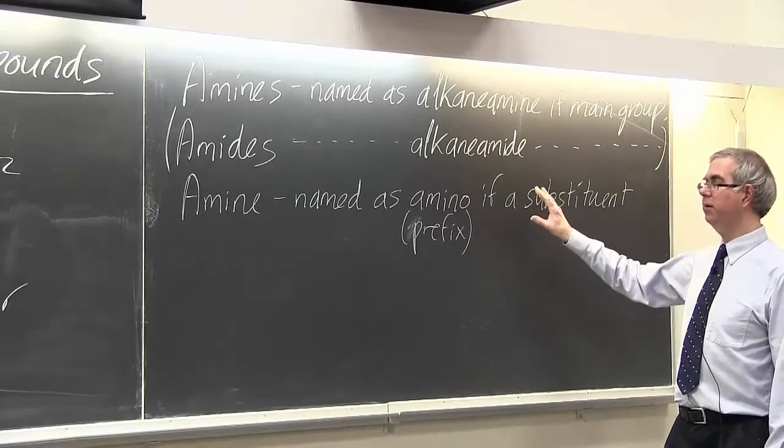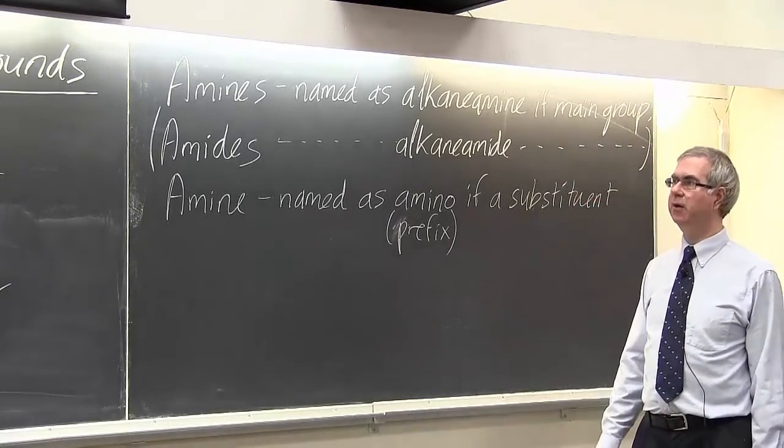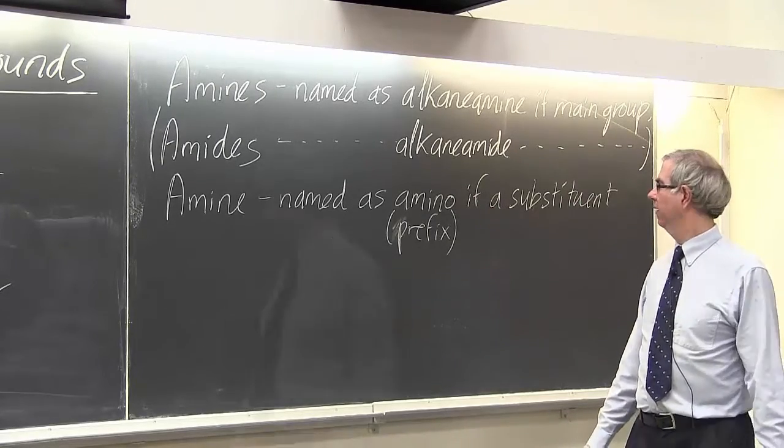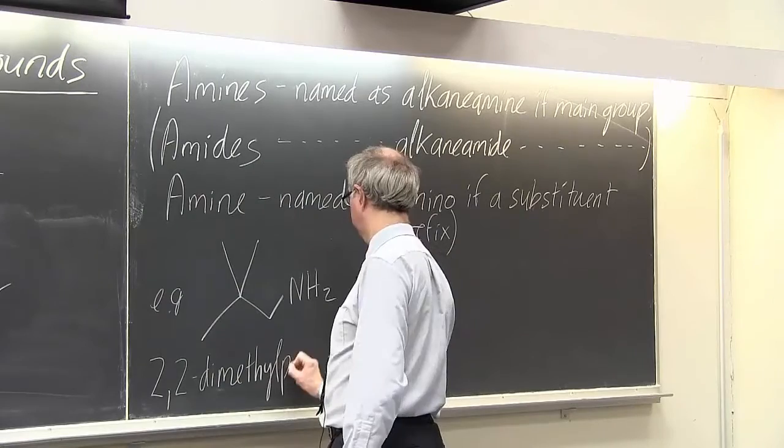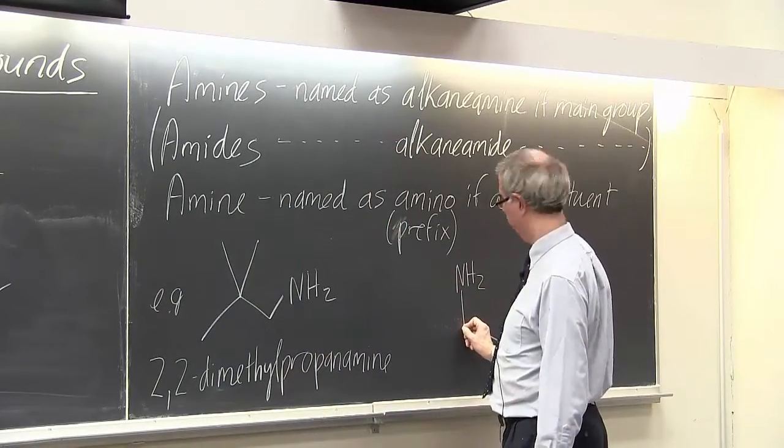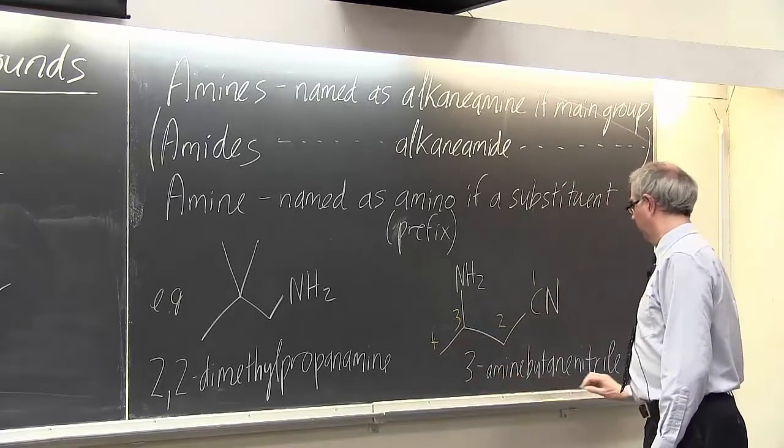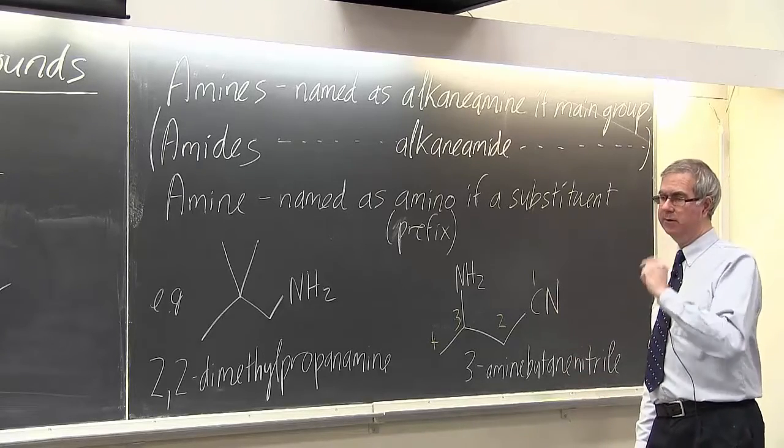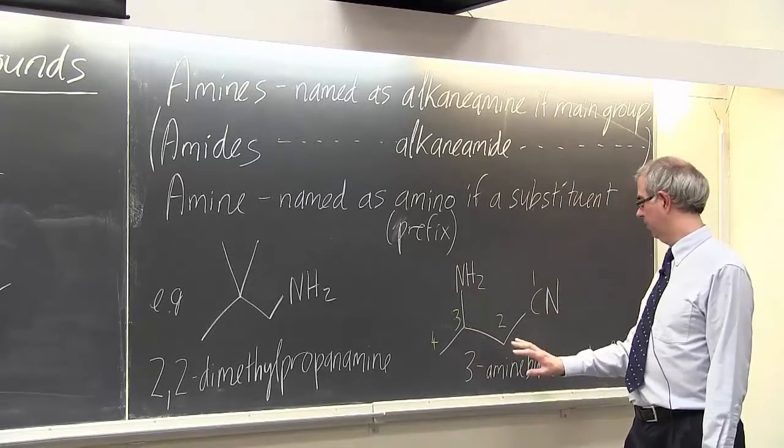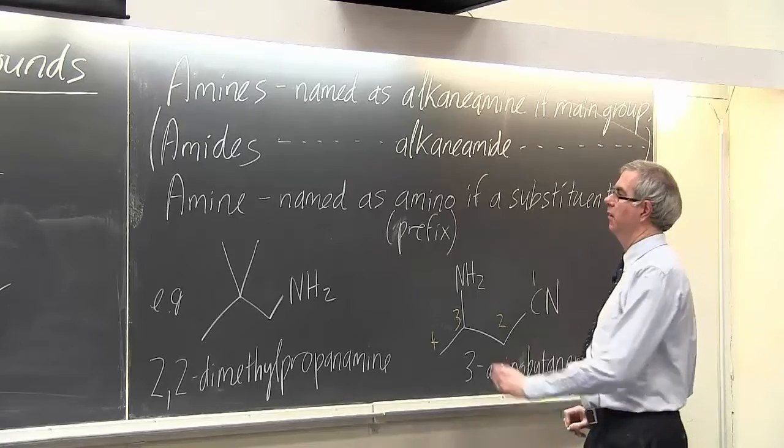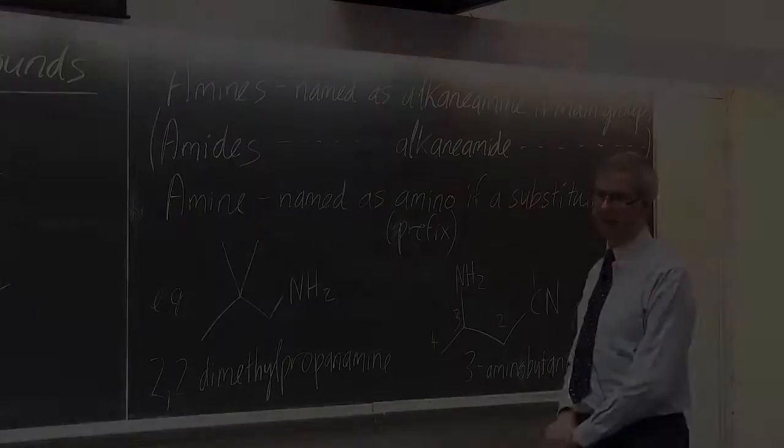If we have higher priority groups present, then the amine is named using the prefix system. So we say aminoethanol, aminopropanol, and things like that. So here are a couple of examples. In this example, the nitrile is the top priority group. That's actually a C-triple bond N. And so the amino group becomes the substituent. That should be amino. So it's at the three position. When we're looking at the nitrile, we have to include the carbon of the nitrile and not forget about it.